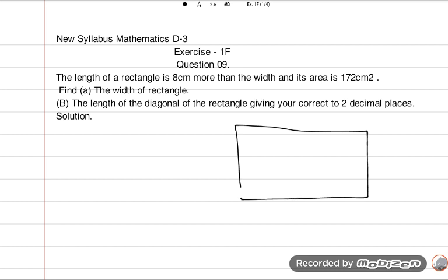You know very well it has width and length. Now we read this question: The length of a rectangle is 8 centimeters more than the width and its area is 172 centimeters square. So we know the shape. There is no length given, there is no width given, but only the relation is given, which is length 8 centimeters more than width.